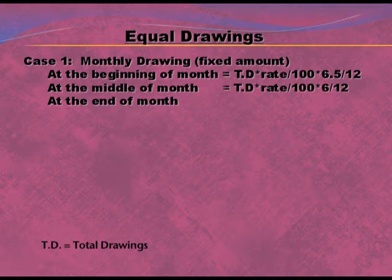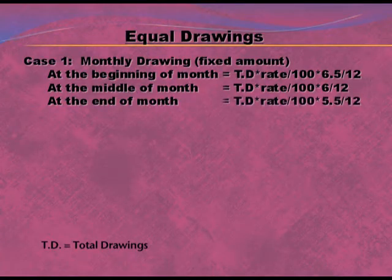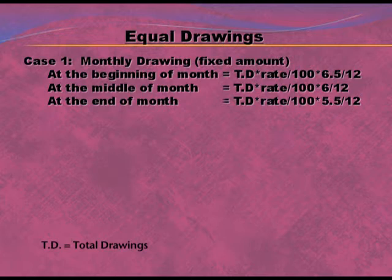Third, at the end of the month: drawings are made on 31st January, 28th February, 31st March, and so on up to December. The formula is: Total Drawing × Rate/100 × 5.5/12. The average period formula is: time left after first drawing plus time left after last drawing, divided by two.